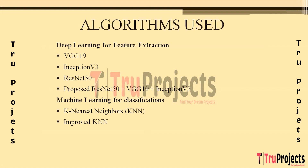Improved KNN enhances standard KNN by optimizing its hyperparameters through grid search cross-validation, which systematically explores hyperparameter combinations to fine-tune KNN, improving its accuracy in detecting Parkinson's based on handwriting features. Support Vector Machines (SVM) work by finding a hyperplane that best separates different classes in a high-dimensional feature space, applied here to create an optimal decision boundary leveraging extracted handwriting features for accurate Parkinson's detection.